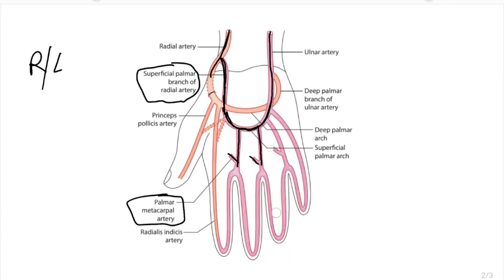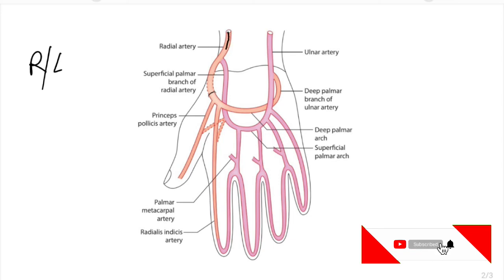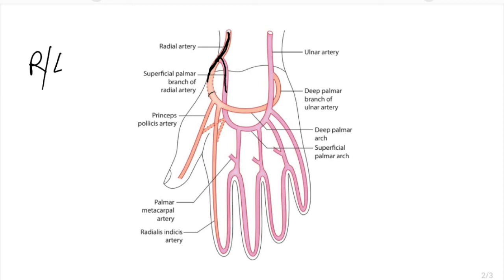Now we will discuss the deep palmar arch. The main contribution is by the radial artery. The radial artery has a deep branch — the superficial branch already takes part in the superficial palmar arch. The deep branch passes through the anatomical snuff box, then toward the first interosseous space on the dorsal side, and then appears into the palm. After entering the palm, it gives one branch to the thumb — the princeps pollicis artery — and another branch running toward the radial side of the index finger, known as the radialis indicis artery.